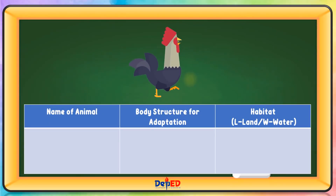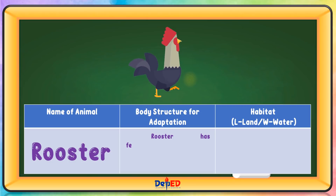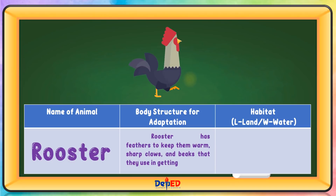Name of animal: Rooster. Body structure for adaptation: Rooster has feathers to keep them warm. Sharp claws and beaks that they use in getting their food. Habitat: Land.